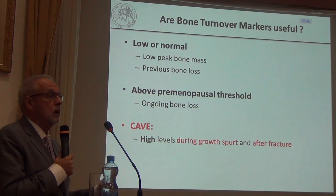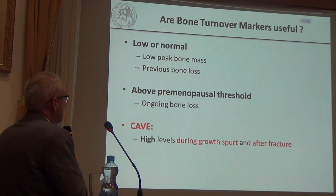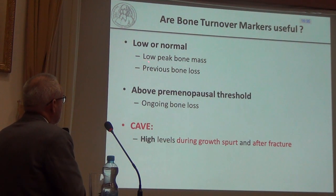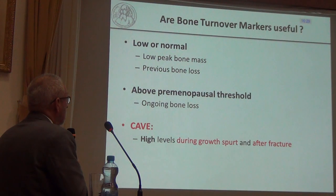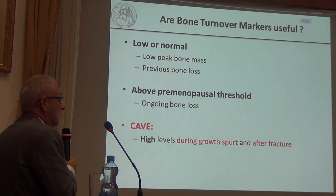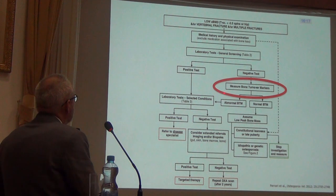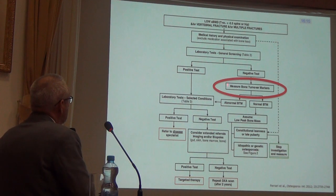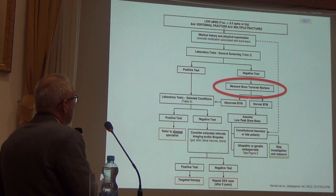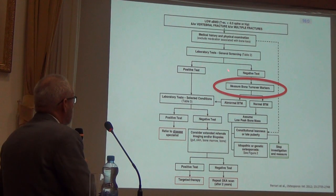Bone turnover markers are similarly ambiguous in premenopausal as in postmenopausal osteoporosis. Low or normal markers suggest low peak bone mass or previous bone loss; elevated markers suggest ongoing bone loss, though high levels can also occur during growth and after fracture. An algorithm by Serge Ferrari includes bone turnover marker measurement, and if markers are very high this is a reason to pursue deeper investigation.